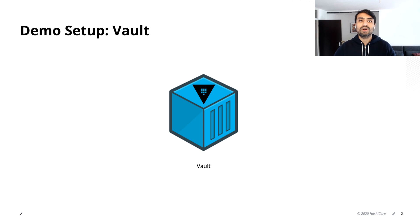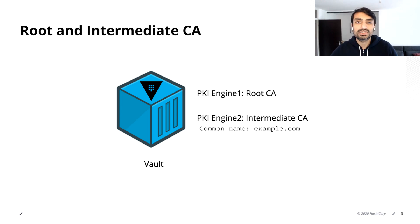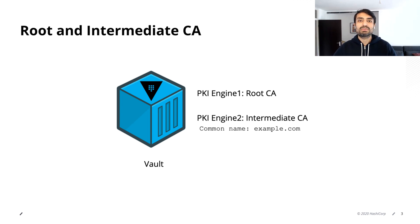The setup looks like this: I run Vault within a Docker container in dev mode on my laptop, and then I enable the PKI secret engine to configure the root CA. If you have your own root CA, you do not need to use that, but for a demonstration in a dev environment, it is very helpful to just use Vault as the root CA. Then I'm going to enable another PKI secret engine, which is going to act as the intermediate CA, and I'm going to use the common name as example.com.